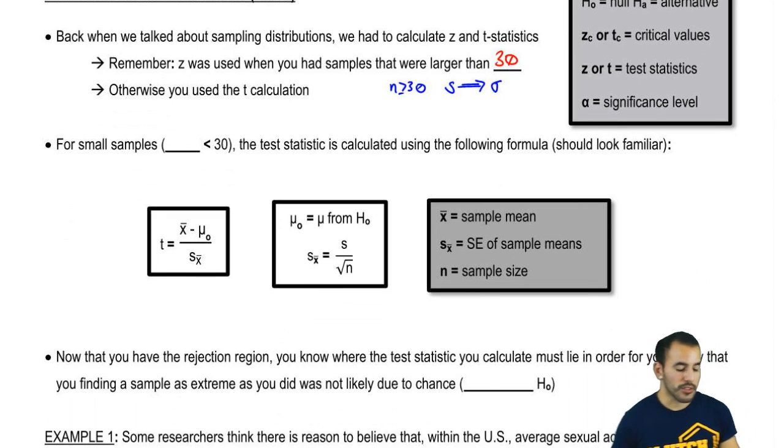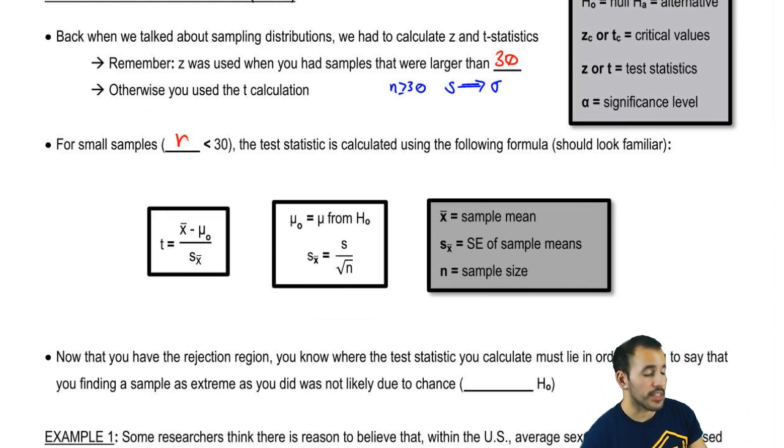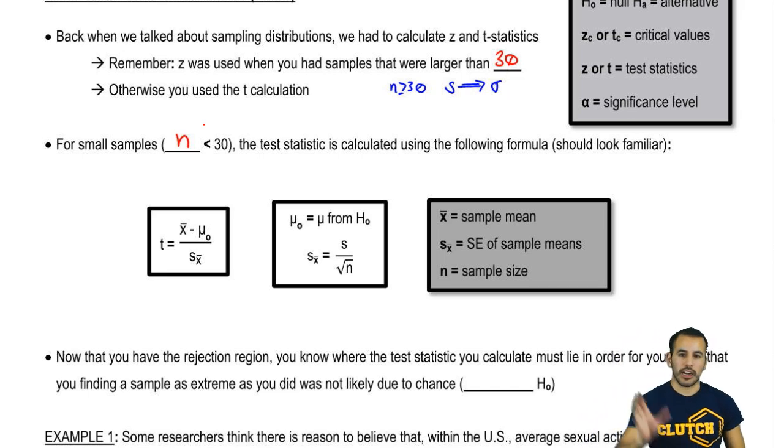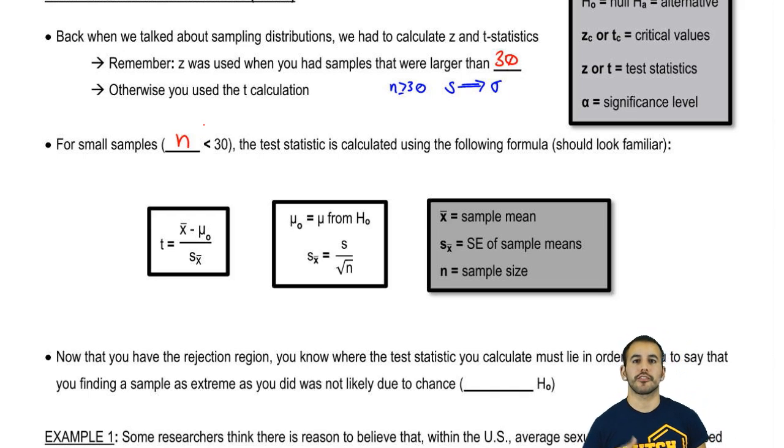For samples that are small, n is less than 30, the test statistic is calculated using the following formula, and it should really look familiar. It should look exactly the same as what we did with the z distribution. I have the breakdown: null and alternate H0 and Ha, the z critical or t critical, z or t test statistics, and then alpha is the significance level that's going to be given for every hypothesis test.